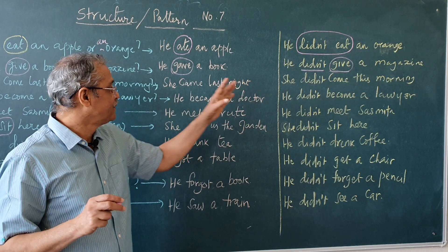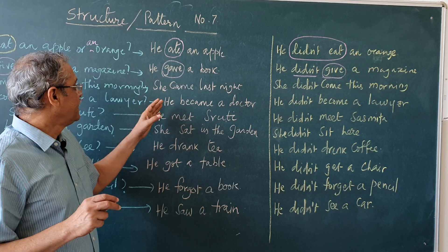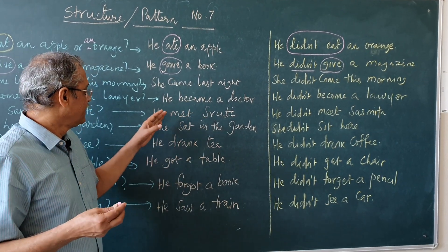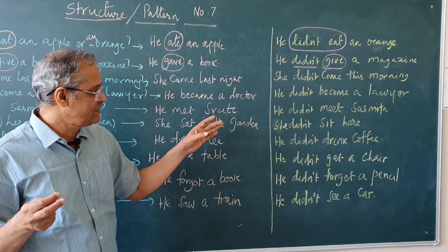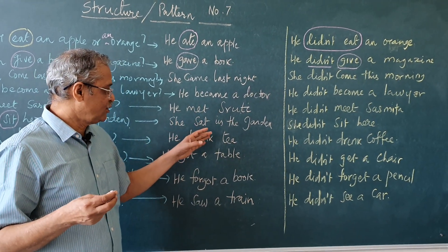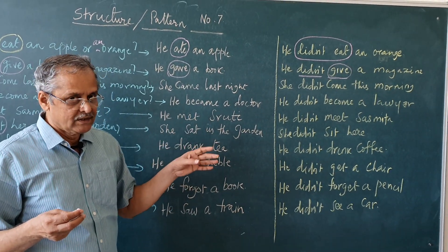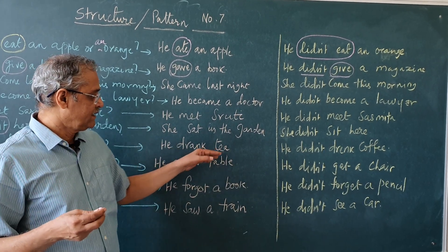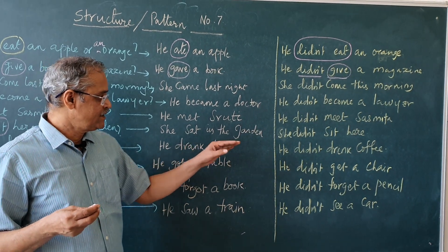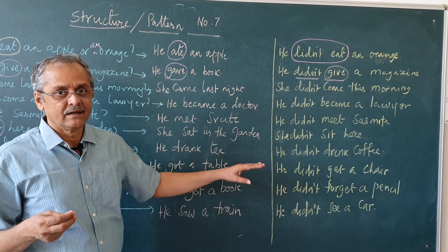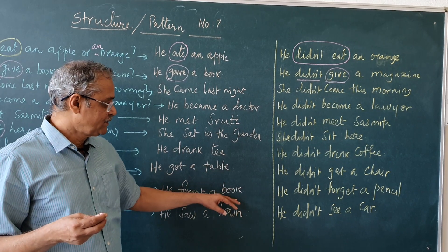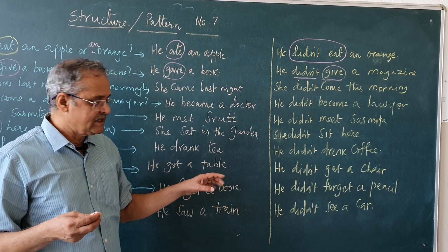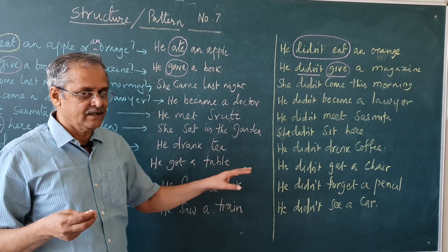He gave a book. He didn't give a magazine. She came last night. She didn't come this morning. He became a doctor. He didn't become a lawyer. He met Shruti. He did not meet Sasmita. She sat in the garden. She did not sit here. She didn't play with me — I am using the present tense with 'did.' He drank tea. He didn't drink coffee. He got a table. He didn't get a chair. He forgot a book. He didn't forget a pencil. He saw a train. He didn't see a car.